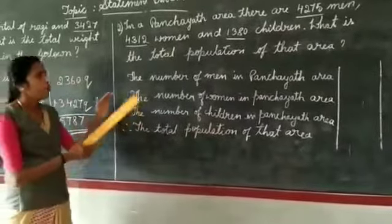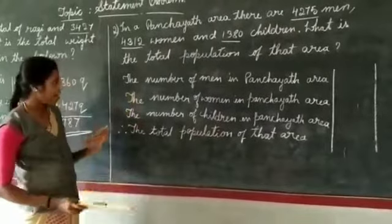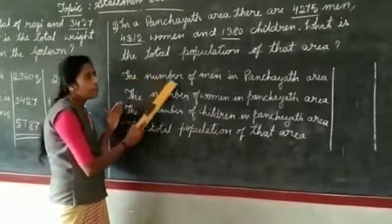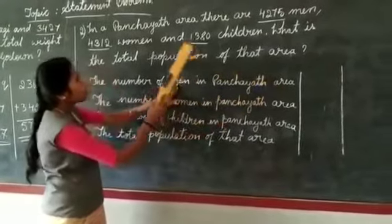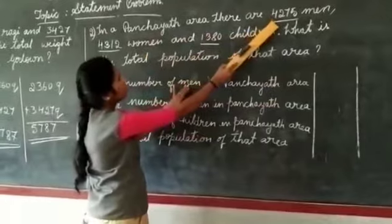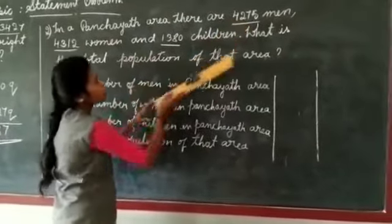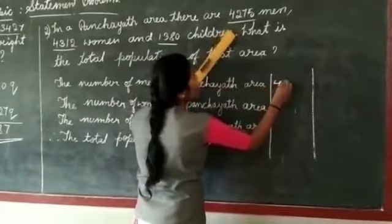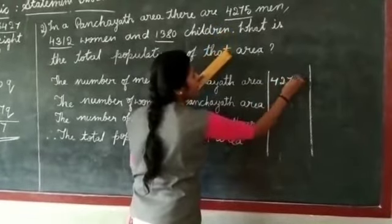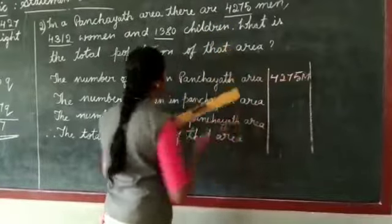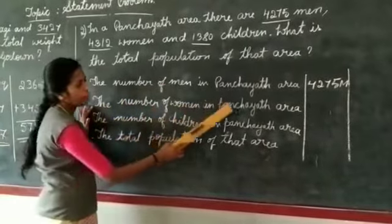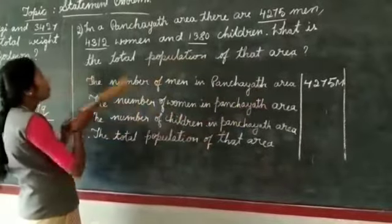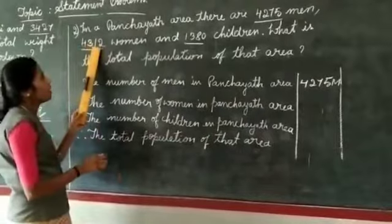Here, we have to write the sentence. The number of men in Panchayat area is 4,275. The number of women in Panchayat area is 4,312.